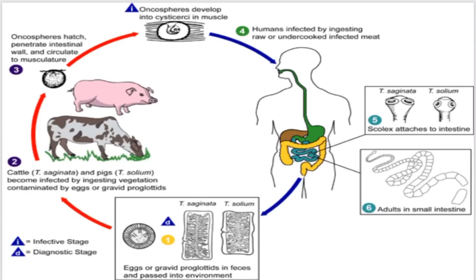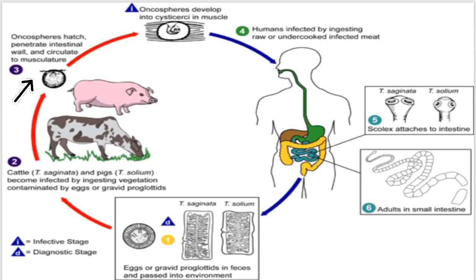Diagrammatic representation of the life cycle of Taenia saginata: when eggs or gravid proglottids are passed in feces, they are introduced into the environment. They are ingested by cattle in the case of Taenia saginata, and by pigs in the case of Taenia solium. The oncospheres hatched from eggs penetrate the intestinal wall and circulate to the musculature, where they develop into cysticerci. When this undercooked meat is eaten by a human being, infection with Taenia saginata occurs. In the case of Taenia solium, two types of infection result: taeniasis and cysticercosis.